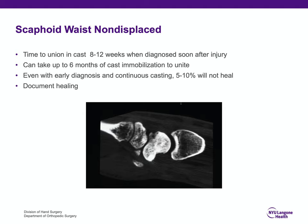It's been shown that if you diagnose and immobilize someone within a day or two of scaphoid waist fracture, it will heal at a higher rate and faster than if you diagnose it three or four weeks after injury. That is why when we see patients who we think may have a scaphoid waist fracture, we put them into immobilization in the emergency room — that's the golden time.